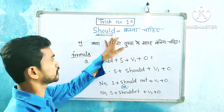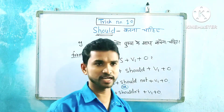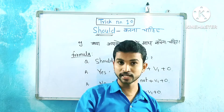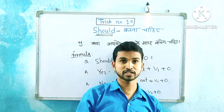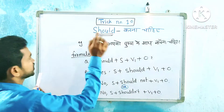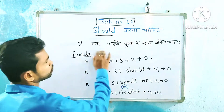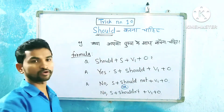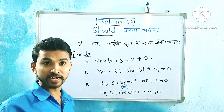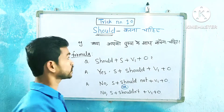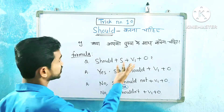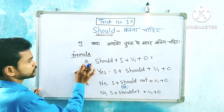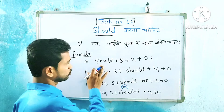'Karna chahiye, lena chahiye, dena chahiye, khana chahiye, peena chahiye, likhna chahiye' — chahiye is always there. For example: 'Mujhe Pushpa ke saath dance karna chahiye' means 'I should dance with Pushpa.' And 'Mujhe Pushpa ke saath dance nahi karna chahiye' means 'I should not dance with Pushpa.'